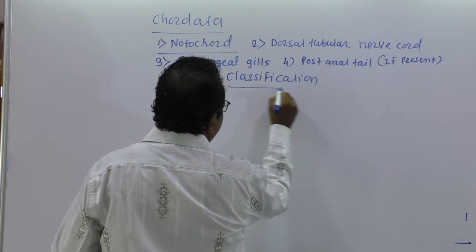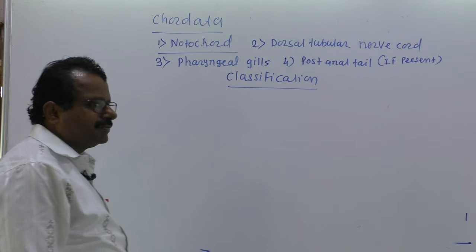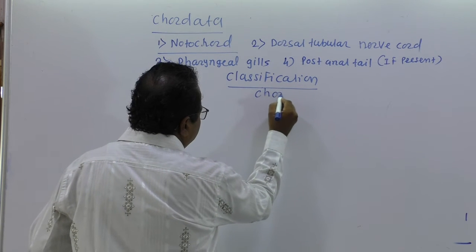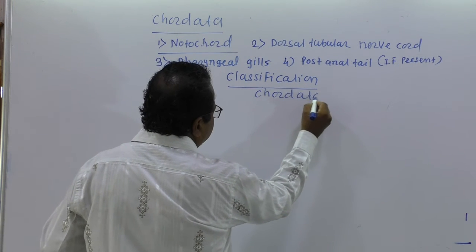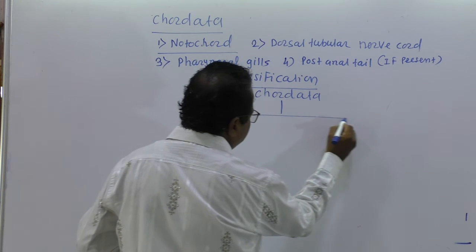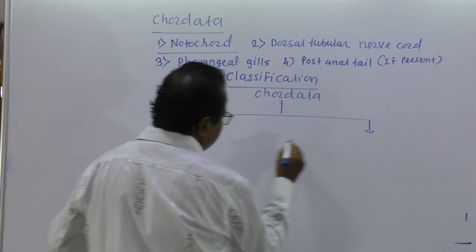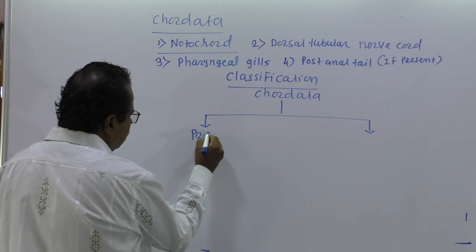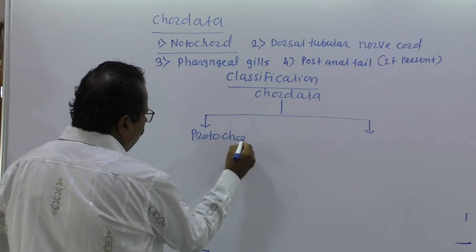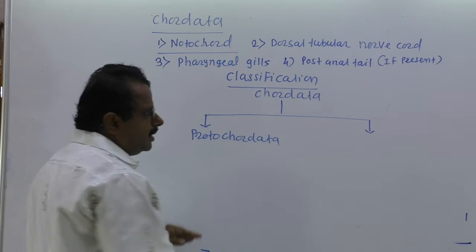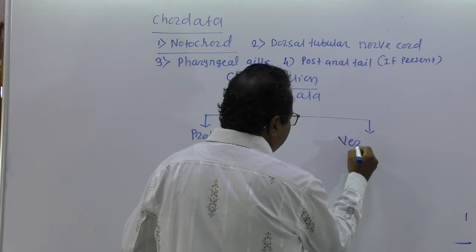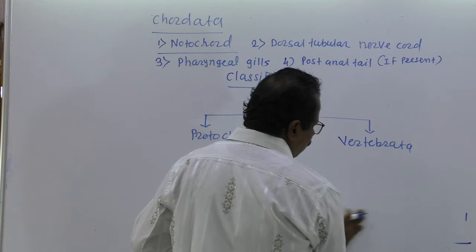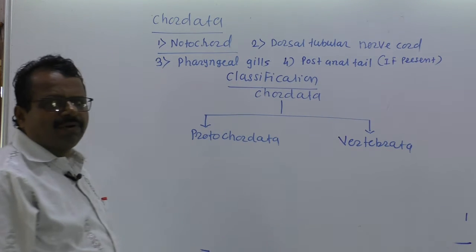So these are the important characters of Chordates. Now let us look at the classification of Chordata. Chordata is divided into Protochordata and Vertebrata.